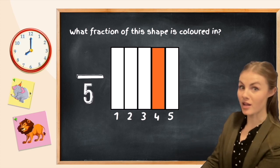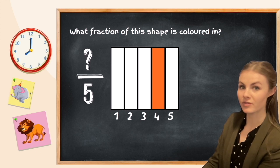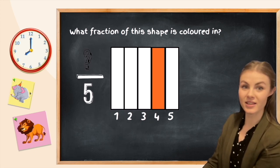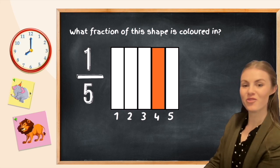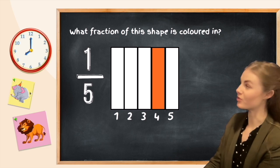And now we've got to figure out how many parts are colored in of those five. Well, it's just the one part, isn't it? So what fraction of our shape is colored in? One fifth. We've got one fifth of our whole that is colored in.